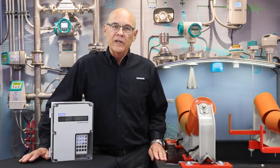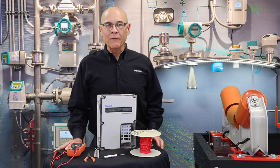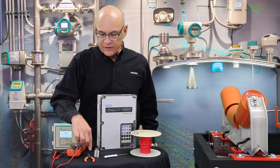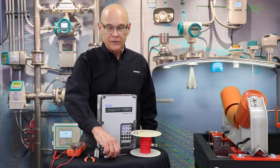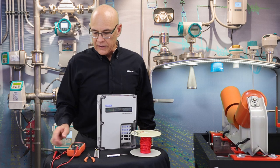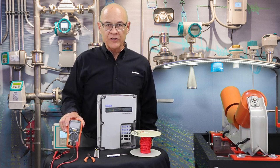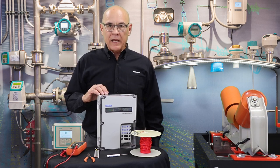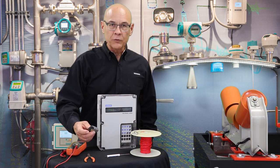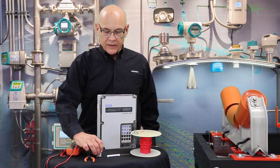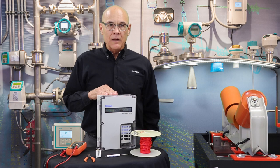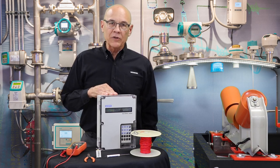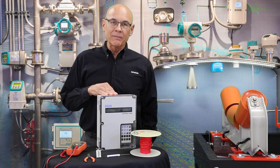Some tools that you may need to perform the load cell checks are maybe some hookup wire, wire strippers, pliers, screwdriver. You also need a digital multimeter to measure the voltage signals with some test leads. You also need a power supply of some sort, either a 9 volt or 12 volt battery. It's actually preferable to use the power supply from your weighing controller. That's always best because you can actually test the performance of the weighing controller at the same time.